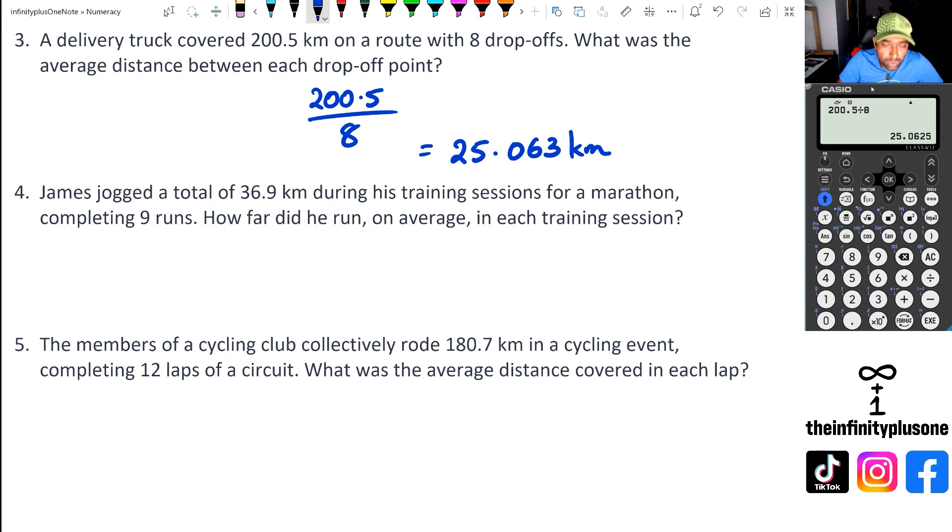Alright, let's have a look at question four. Question four is 36.9, and that's divided by nine runs. So 36.9 divided by nine is going to give us 4.1 kilometers per training session.